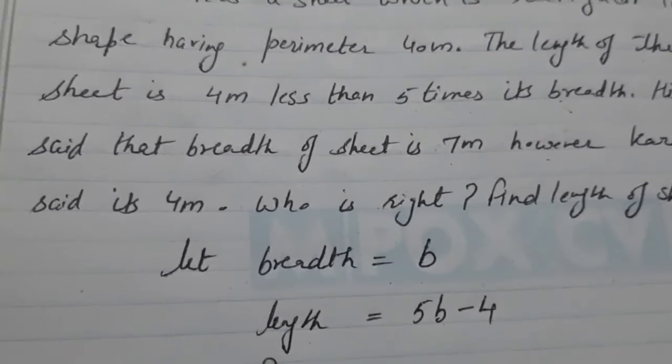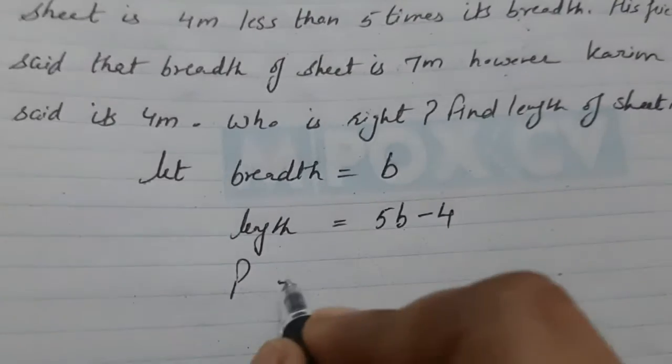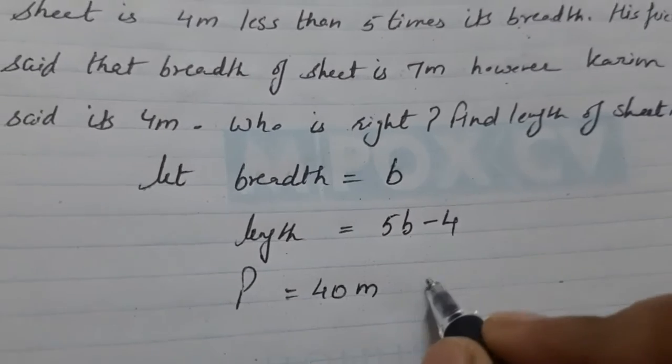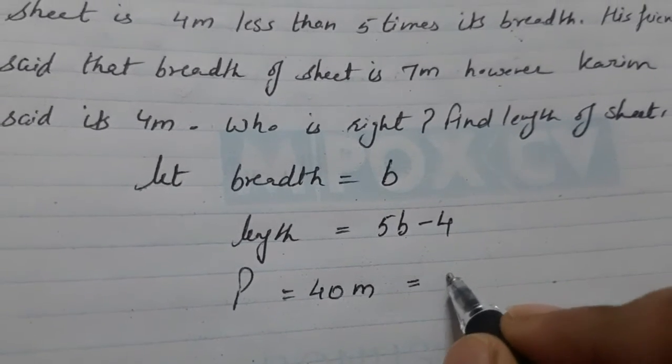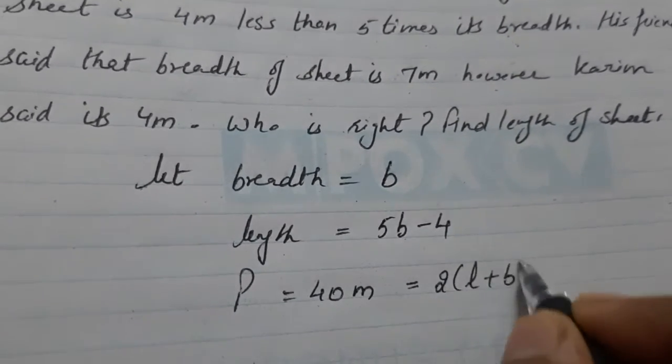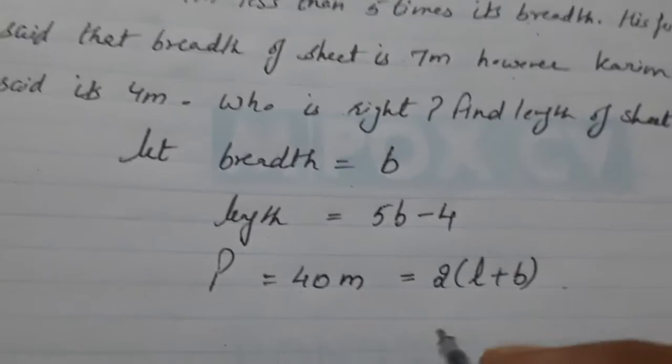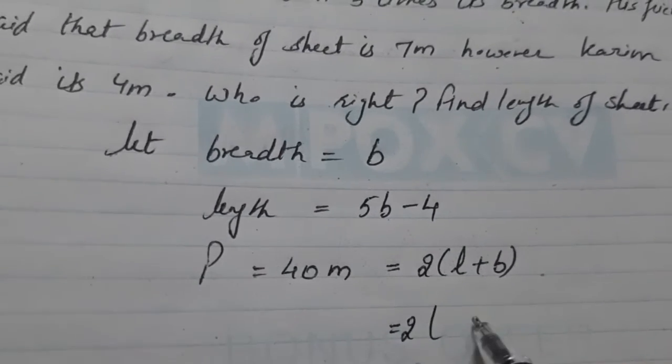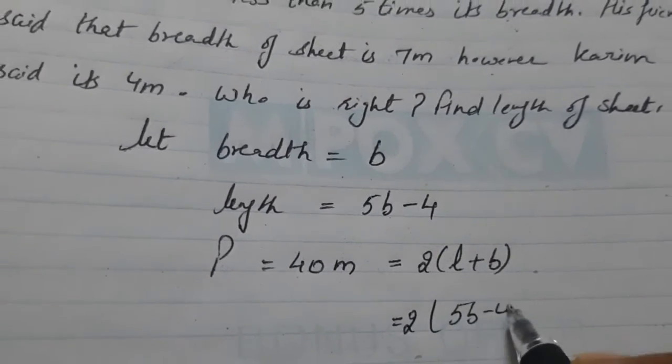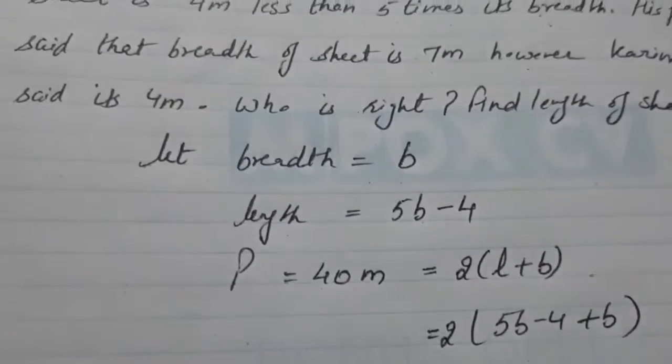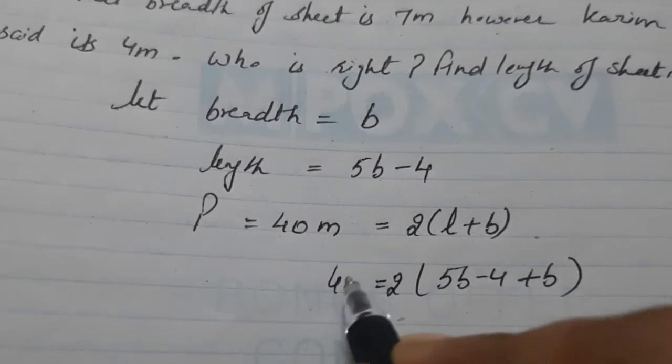And perimeter is given. Perimeter is 40 meters. So, what is the formula for perimeter for rectangle? That is 2 times L plus B. So, we will put the values here to L is 5B minus 4 and B is already B here. 40.